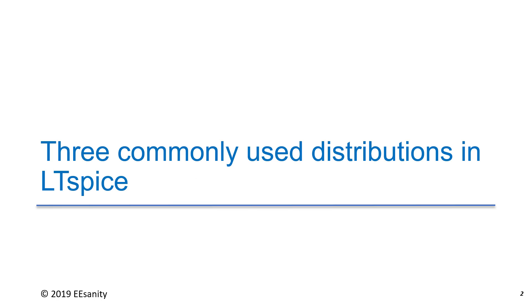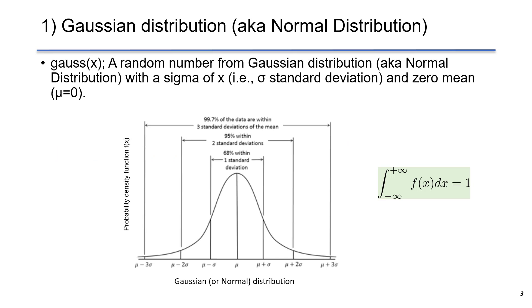There are three commonly used distributions in LTSPICE. The first one is Gaussian distribution, also known as normal distribution. The syntax is gauss of x. It gives a random number from Gaussian distribution with sigma x and zero mean. Sigma is the standard deviation in normal distribution.